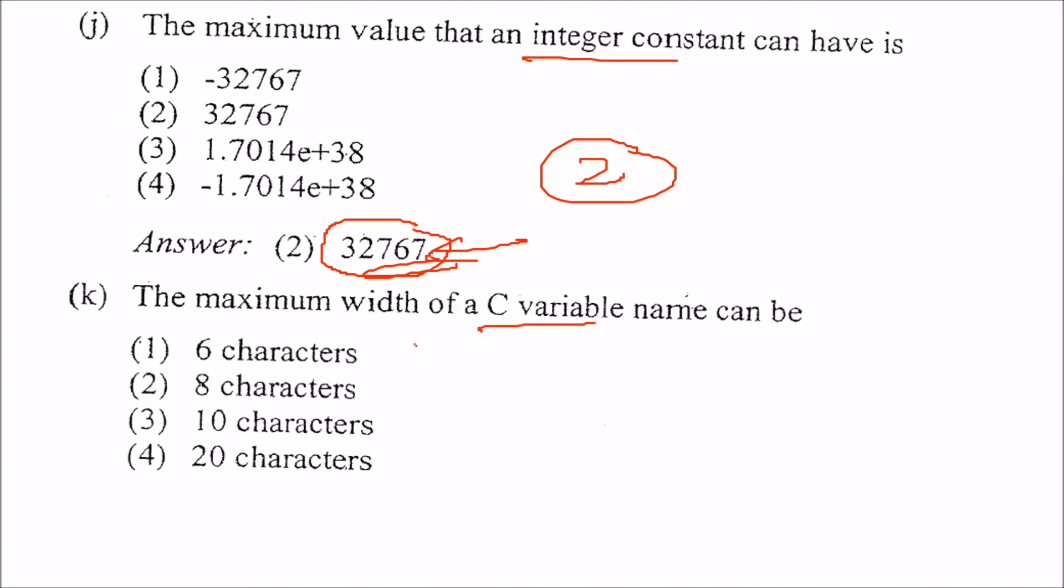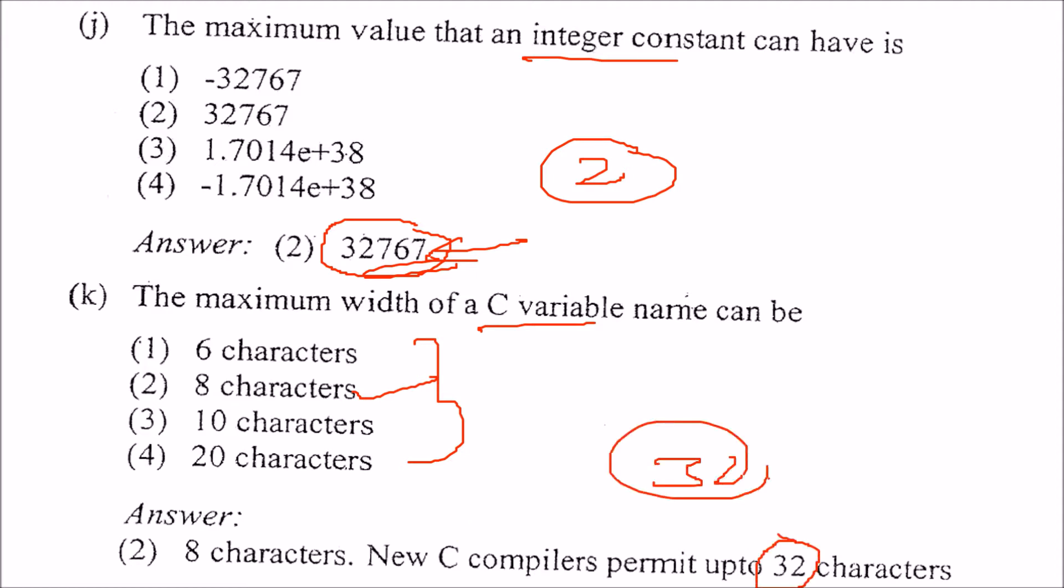The maximum width of C variable name can be. Again, here also, the C variable name can be, you know, it also system dependent. So, it can be anywhere, any character long. But, we stick for the question answer purpose, 8 characters. New compilers, they could be 32 characters. So, we will stick to 32 characters. It can go up to more than that. For answering this question, you will go to the second one. Otherwise, it can go up to any number of character.